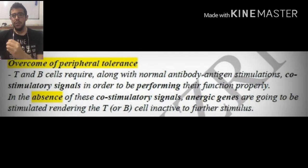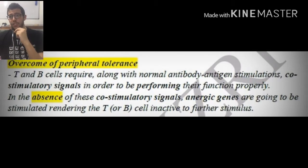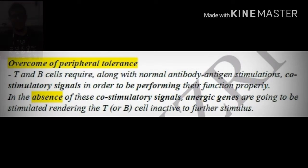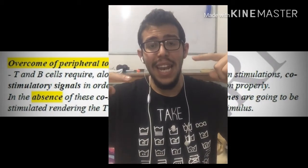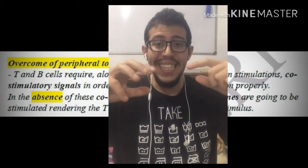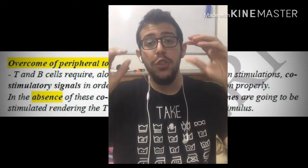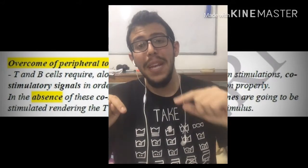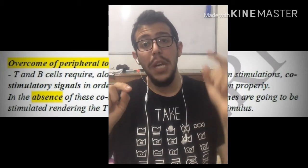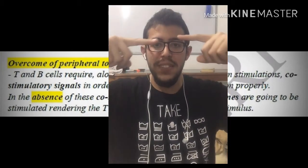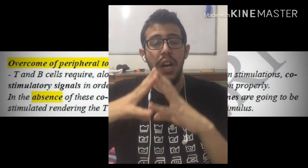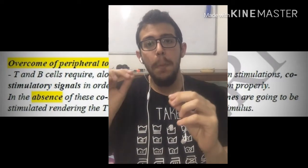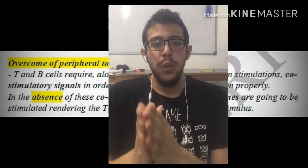Moving forward to peripheral tolerance: T and B cells require, along with normal antigen stimulation, co-stimulatory signals. One simple signal between the antigen-presenting cell and the lymphocyte is not enough to trigger a response. A co-stimulatory signal must also be present on the surface of both cells in order for immune activation to occur.